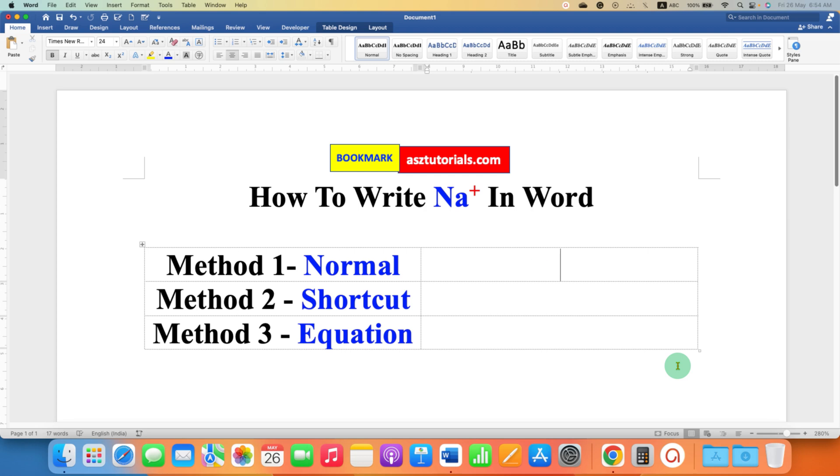In the first method, you just have to type Na on your keyboard and then type plus next to the Na. Now, use your mouse to select the plus. After selecting the plus, you can click here on X square. This is the superscript option which will raise the plus on the Na like this.